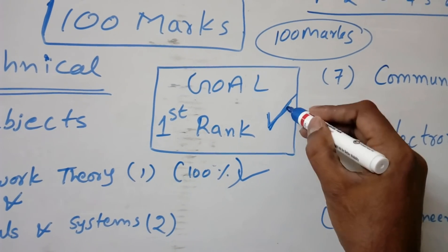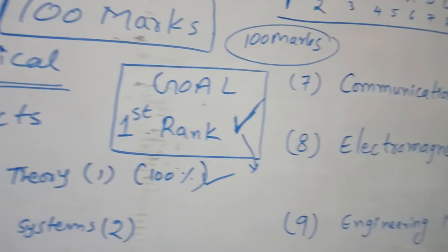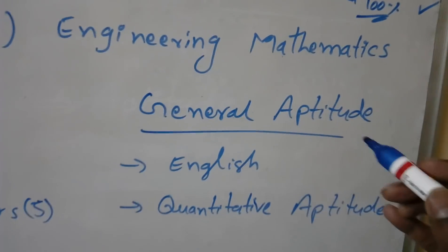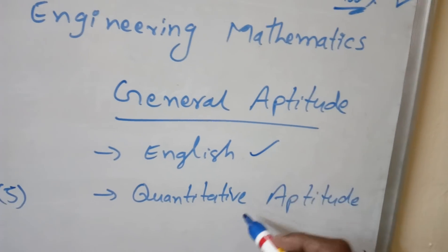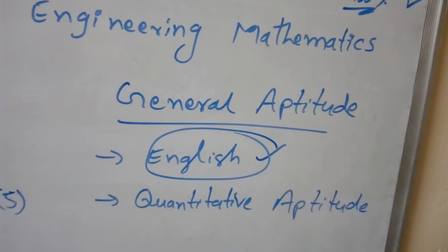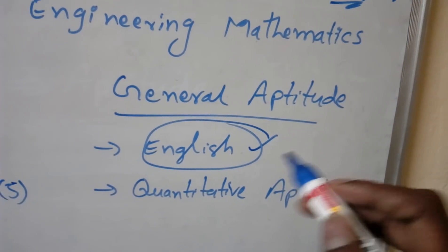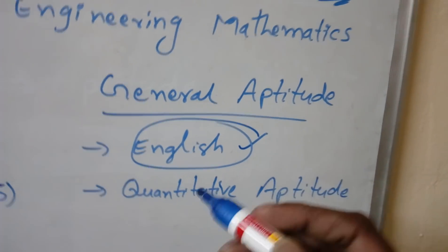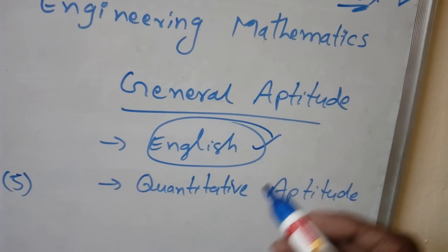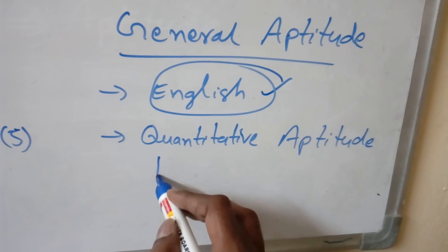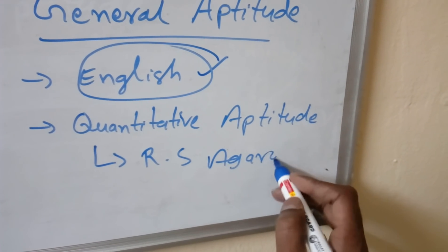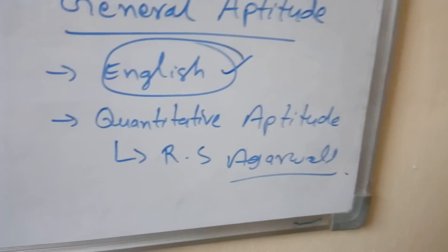For general aptitude, you will have English and quantitative aptitude. For English, there's no special coaching needed - read the newspaper daily and you'll get sentence corrections or sentence filling. For quantitative aptitude, follow RS Aggarwal. We will also guide you on which topics give more percentage in the GATE exam.